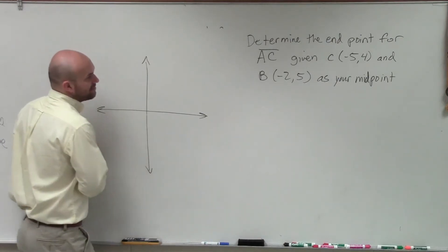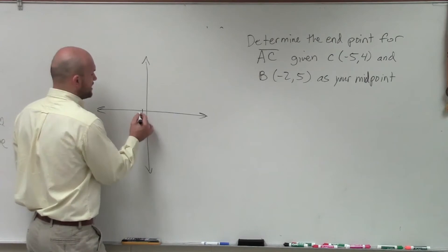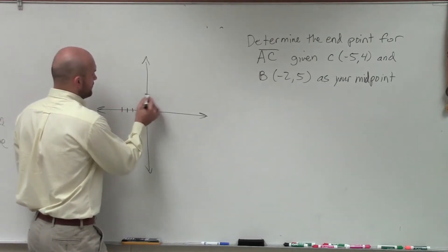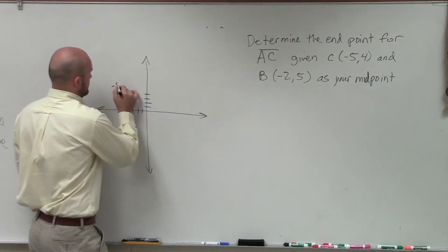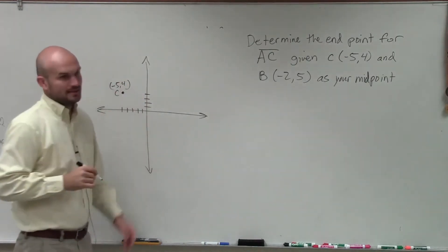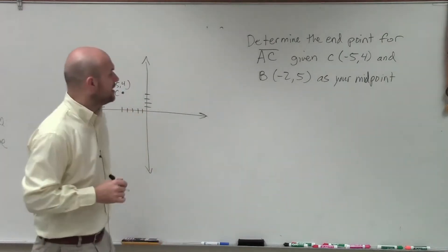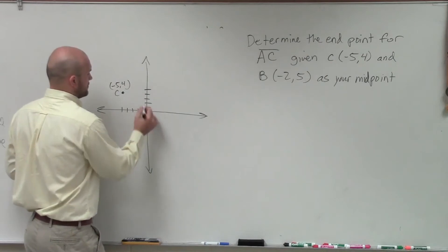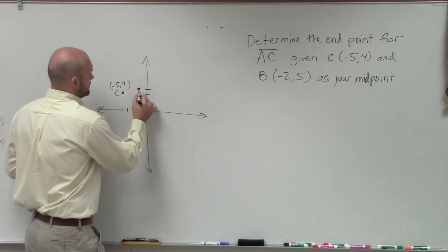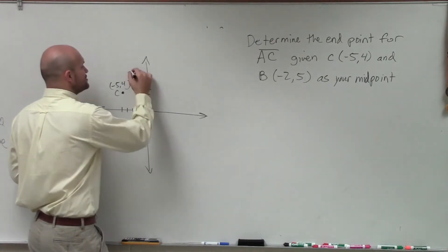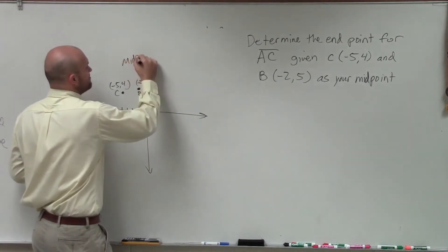So it says, determine the endpoint for AC given C is negative 5, 4. So negative 1, 2, 3, 4, 5, up 4, 1, 2, 3, 4. Does everybody agree that's point C? Yes? And then B is going to be at negative 2, up 5. OK? Negative 2 comma 5.